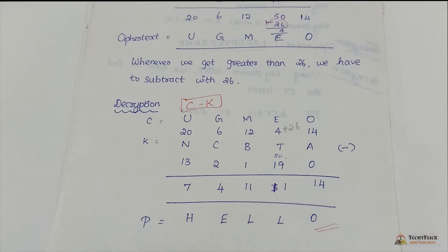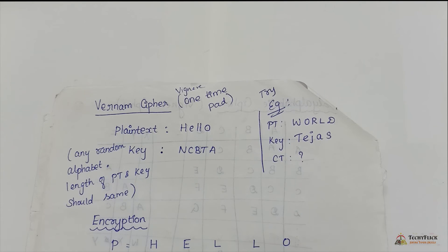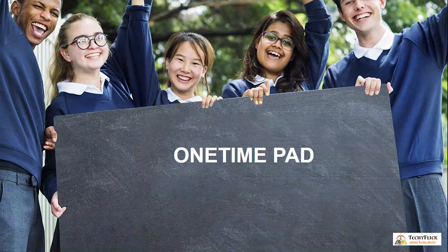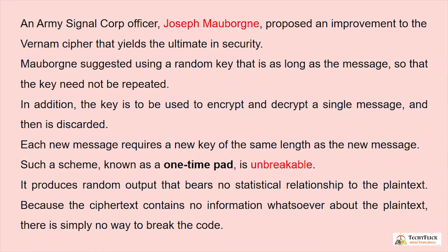So again we recover the plain text. Regarding the one-time pad: an Army Signal Corps officer, Joseph Mauborgne, proposed an improvement to the Vernam cipher that yields the ultimate in security. He suggested using a random key that is as long as the message so that the key need not be repeated. The key is used to encrypt and decrypt a single message and then discarded.